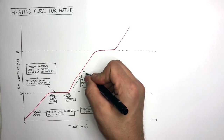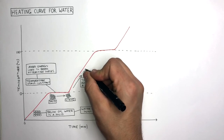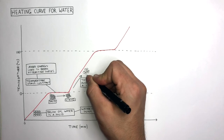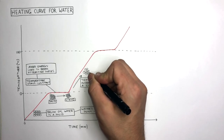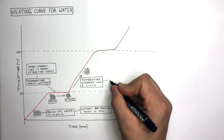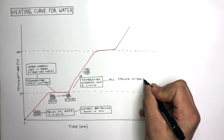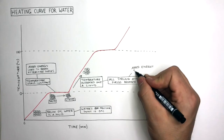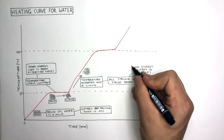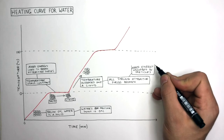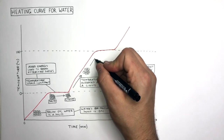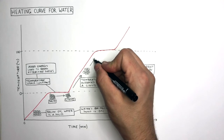Now the ice has melted into liquid water. The water molecules in liquid water are touching, they can flow around each other, and the attractive forces holding the water molecules together are much weaker. By this stage all the strong attractive forces have been broken by the added energy, and the temperature of the water particles keeps on increasing as they absorb more heat energy.